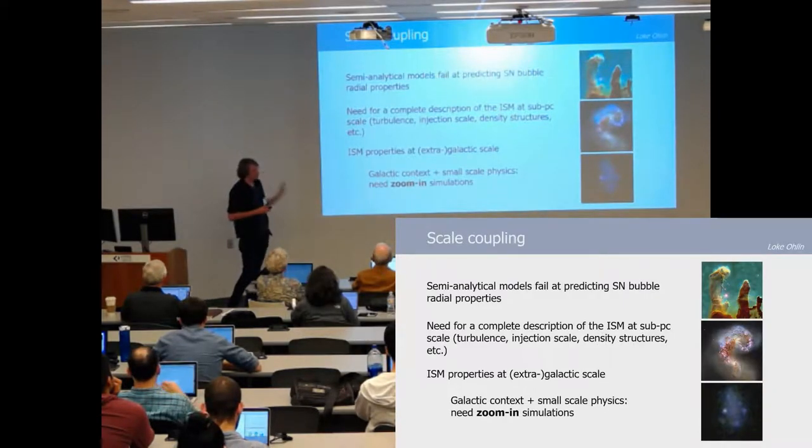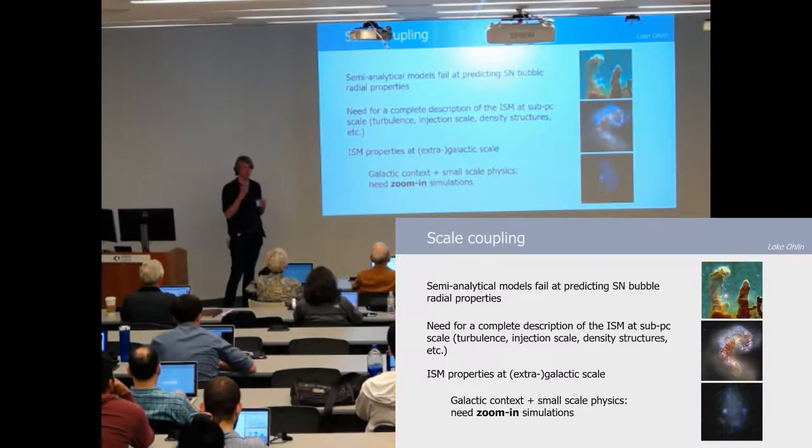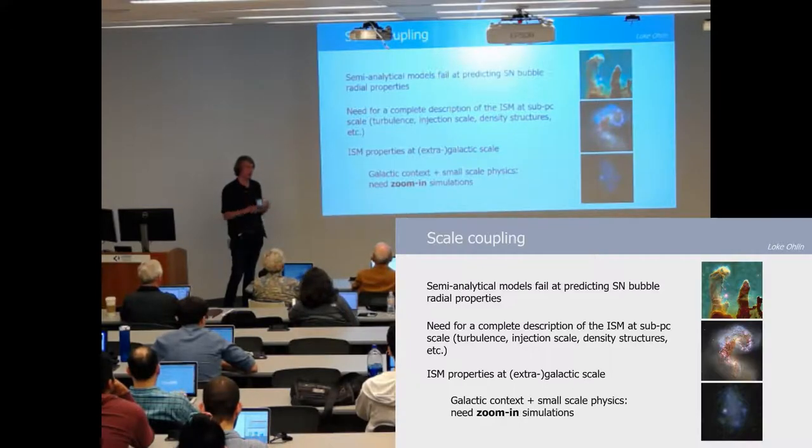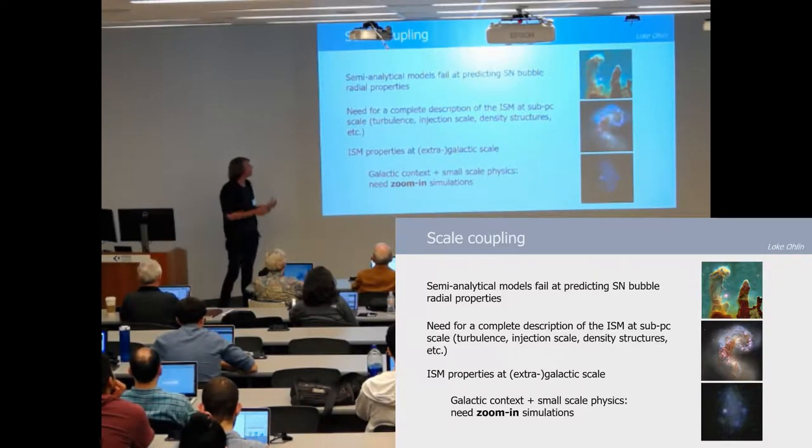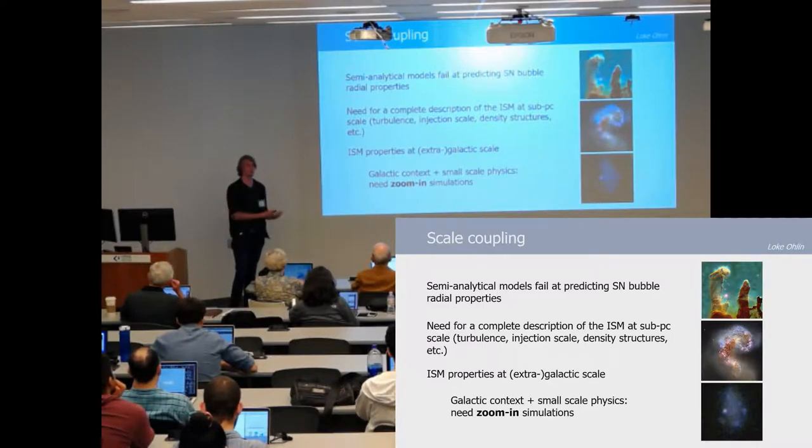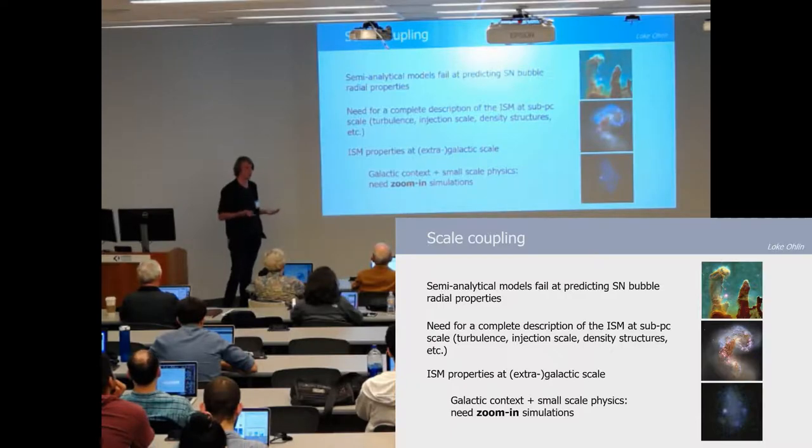As I've shown with the radial histograms, we can't really model properly the propagation of supernovae with simple semi-analytical spherical models. Instead you actually need to see how the gas looks at a sub-parsec scale, where the density structures are actually located. This depends not only on the Mach number but also the injection scale, what is actually driving the turbulence—is it supernova feedback themselves or is it gravitational instabilities?